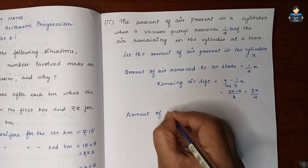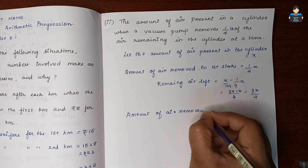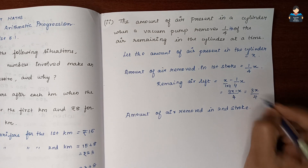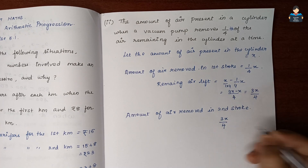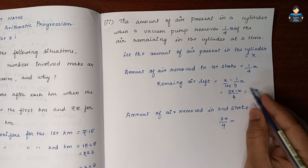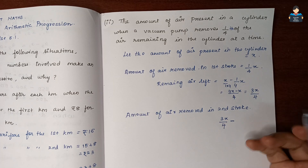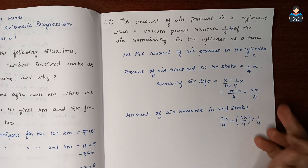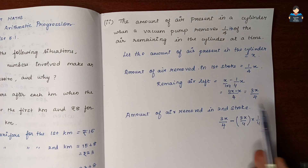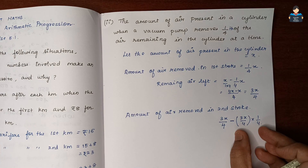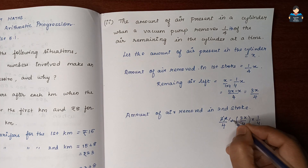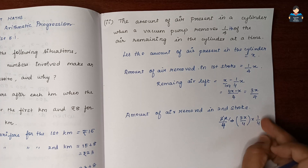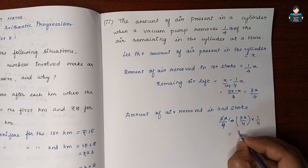For the second stroke, one-fourth of the remaining air is removed. The remaining air before the second stroke is 3x by 4. So air removed in second stroke is 3x by 4 multiplied by 1 by 4, which is 3x by 16. Remaining air after second stroke is 3x by 4 minus 3x by 16, which gives 9x by 16.